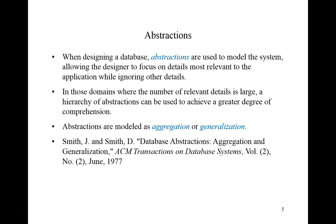When designing a database, we talk about abstractions that are used to model the system. This allows the designer to focus on details that are most relevant to what the application involves while ignoring other details. In domains where there is a large number of relevant details, a hierarchy of abstractions can be used to achieve a greater degree of comprehension. Abstractions are modeled as aggregation or generalization. Both aggregation and generalization may enhance understanding of the domain and our representation or model. However, the focus remains on structural aspects of the model — the attributes of a relation.